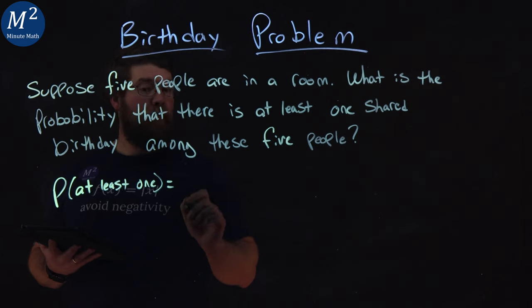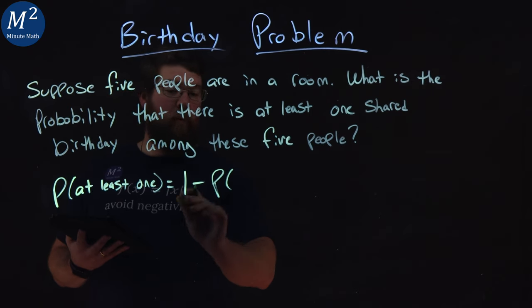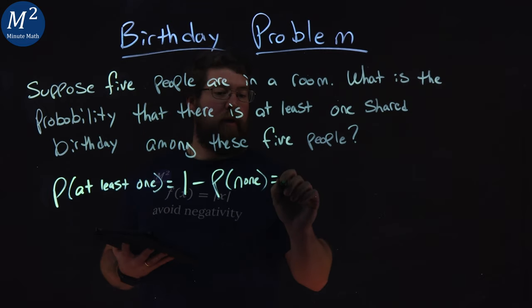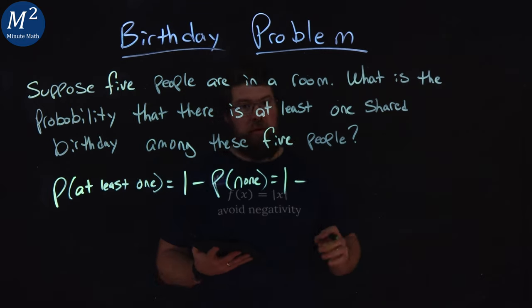is equal to one minus the probability of none. So if we write that out, one minus the probability that no one shares a birthday, and we follow the form from earlier.